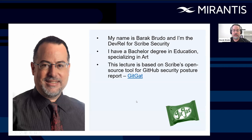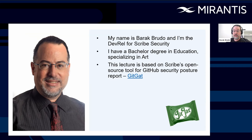Welcome to this lecture — getting started with GitHub security. My name is Barak Rudo, and I'm the DevRel for Scribe Security. I have a bachelor's degree in education, specializing in art — you probably didn't expect that from a cybersecurity DevRel. This lecture is based on Scribe's open source tool for GitHub security reporting. It's called GitGat. You can see the icon at the bottom of the screen.